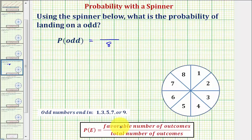And now we'll consider the favorable number of outcomes, which would be the sections with odd numbers, and therefore one is favorable because one is odd. Three is favorable because three is odd.